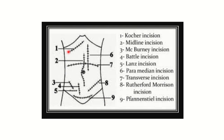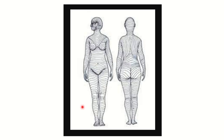Here are the different types of incisions again. Number one is the Kocher's incision, number two is the midline incision, number six is the paramedian incision, number seven is the transverse incision, number three is the McBurney's or gridiron incision, number five is the Lanz incision, number four is the Battle's incision, and there are some other incisions such as the Pfannenstiel incision.